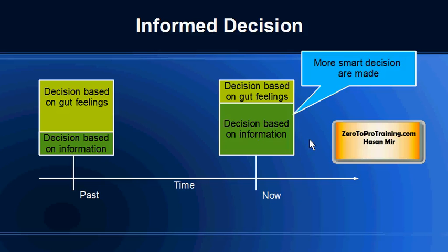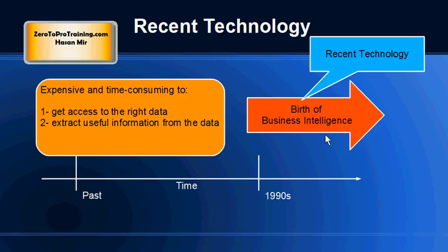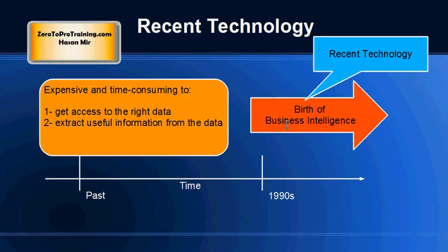We covered business intelligence in detail in the previous session. The term 'business intelligence' was first used in 1958; however, in its current sense it started being used since the 1990s. Business intelligence is not really the name of a software or a breed of software — it is the name of an approach that may include business procedures or technology itself.